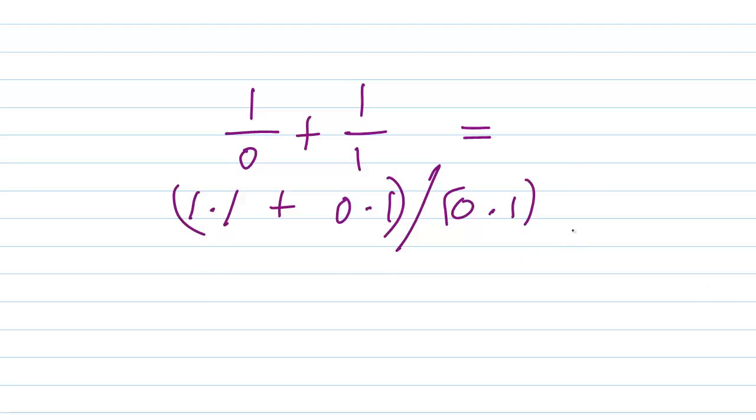Well, what's that? That is 1 plus 0, divided by 0, which equals 1 over 0.